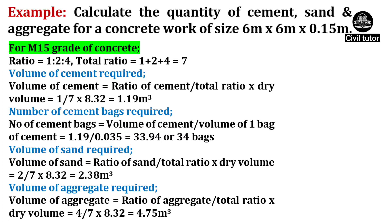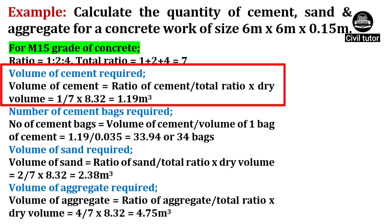Volume of cement required will be equal to ratio of cement upon total ratio, multiplied by dry volume. Ratio of cement is 1, total ratio in this case is 7, and dry volume is already calculated as 8.32. So on substituting these values, volume of cement for M15 grade of concrete is 1.19m³.